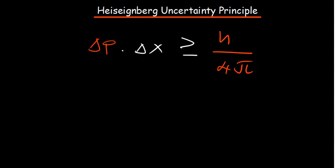Okay, so we go over Heisenberg's 10th principle. So what is it all about? The basic idea is: there is uncertainty in the act of measuring the position and the momentum of a particle.